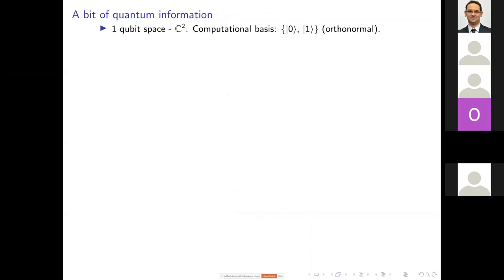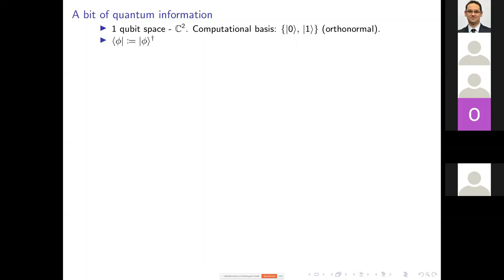Now, more formal things. You probably know what a qubit is — it's the basic unit of quantum information. You can think of it as a vector lying in C², two-dimensional complex space. We usually set an orthonormal basis called the computational basis, where |0⟩ corresponds to the classical 0 bit and |1⟩ to the classical 1 bit. We use bracket notation in quantum physics — the ket, written with a right angle bracket, is just a vector, represented as a column of coefficients.